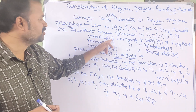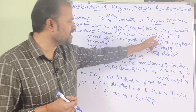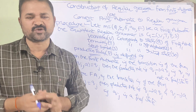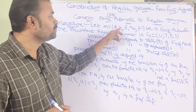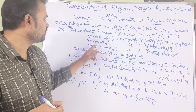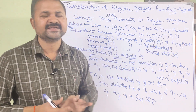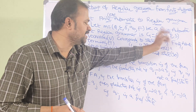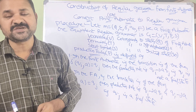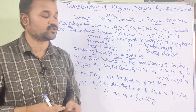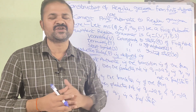The variables V correspond to the states Q of the finite automata — the variables are nothing but the states of the finite automata. Terminals T correspond to the input alphabet sigma of the finite automata. The start symbol S corresponds to the initial state q0 of the finite automata.